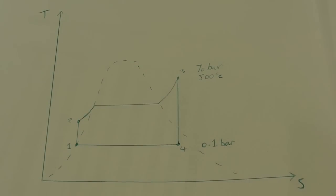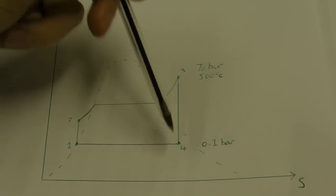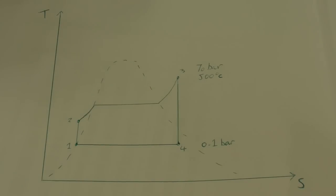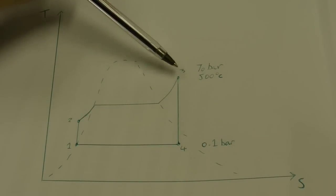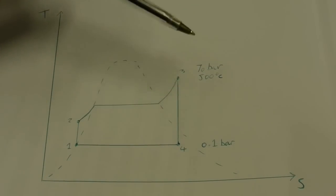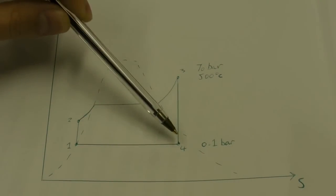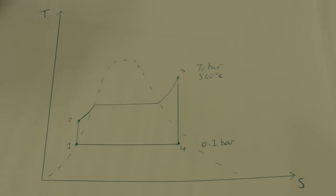One of the things we have to do in this question is calculate the thermal efficiency of the plant. In general, to do that we need to work out the enthalpy at each of the four stages in the Rankine cycle. In this tutorial, I'm just going to talk about stage 3 to stage 4 — the expansion in the turbine — and we're going to calculate the enthalpy at these two points, 3 and 4. We're going to do it using the steam tables first, and then using the Mollier chart.